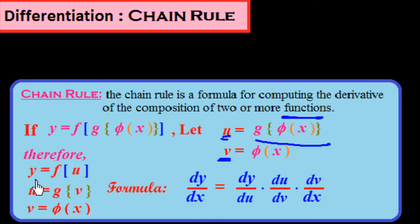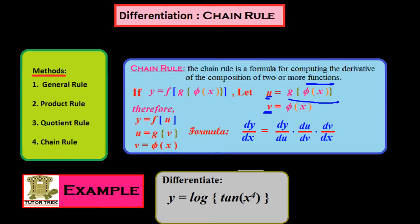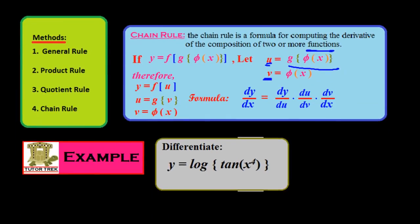We differentiate y with respect to u, differentiate u with respect to v, and differentiate v with respect to x. Finally we get the formula: dy over dx is equal to dy over du times du over dv times dv over dx. I would like to explain with a worked example.